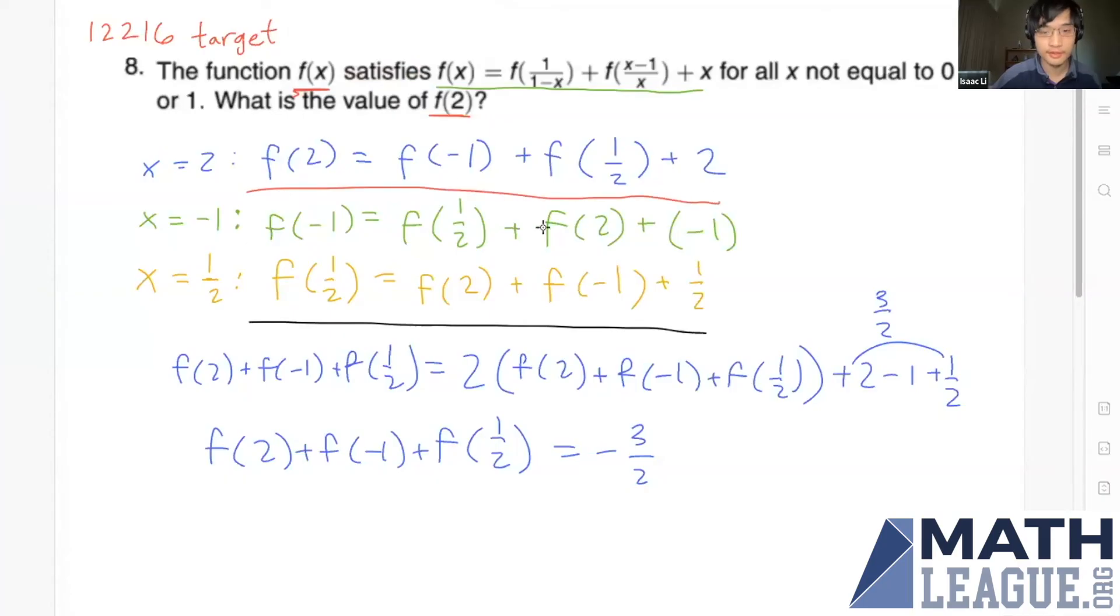Finally, let's use this to find f(2). Using the first equation and adding f(2) to both sides, we get 2f(2) = f(2) + f(-1) + f(1/2) + 2.